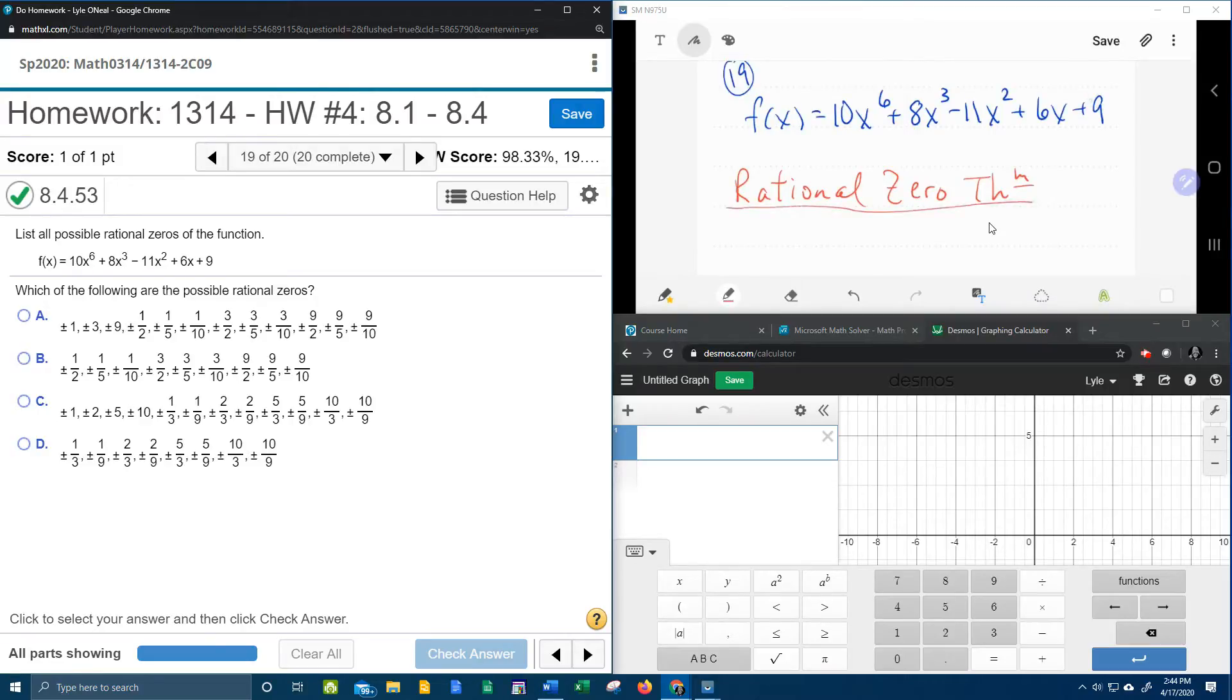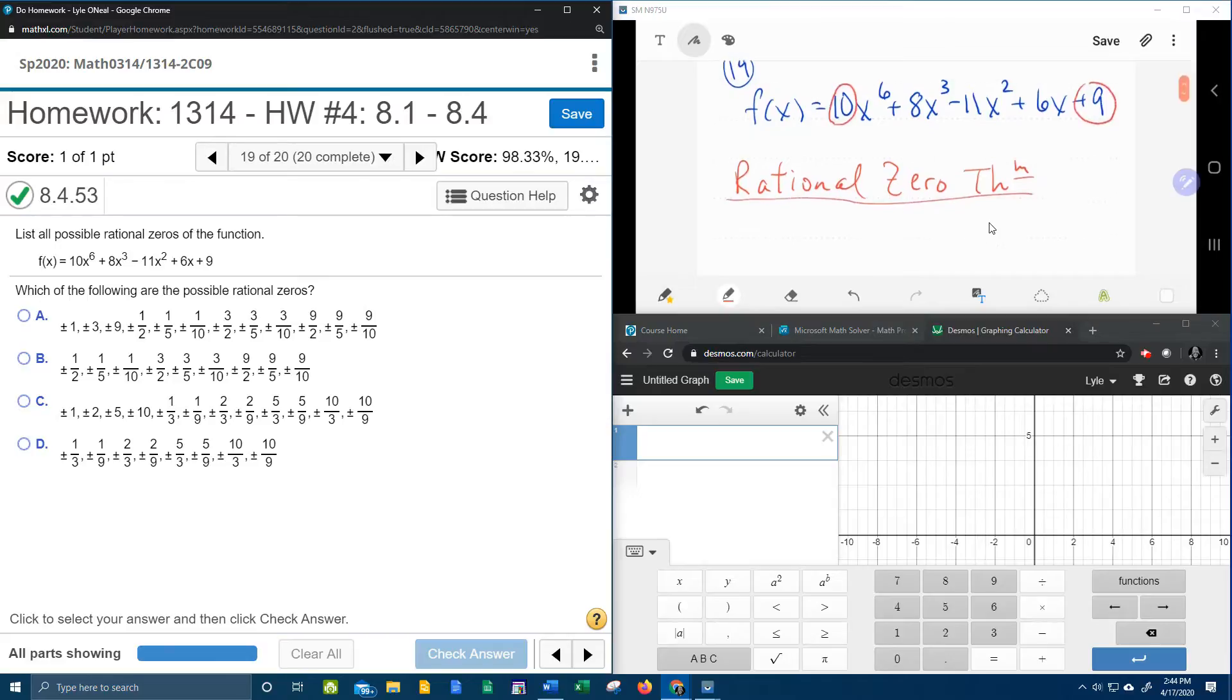Rational zero theorem. And what the rational zero theorem says is if you take all of the factors of the constant divided by all of the factors of the lead coefficient and look at every possible combination of those, then that will be all of the possible rational zeros of the function.